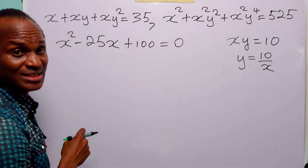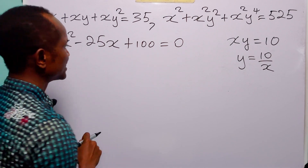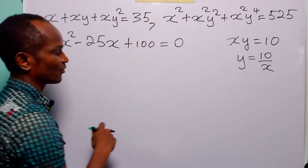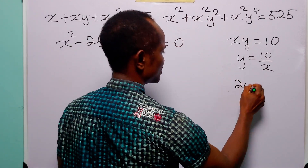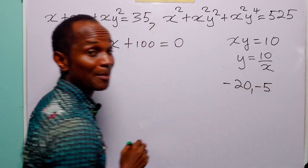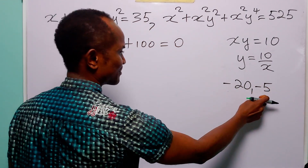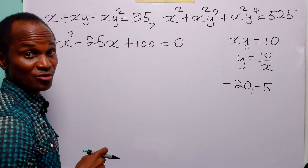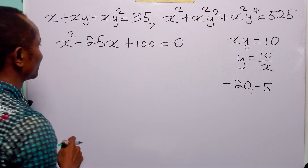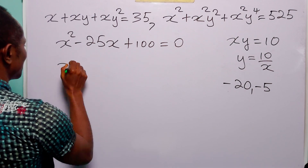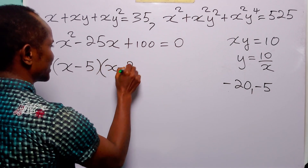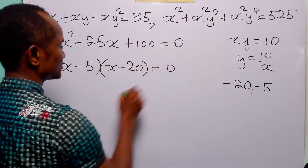Now, to factorize this quadratic equation, all we have to do is find the factors of 100 that add up to minus 25. And that is minus 20 and minus 5, because minus 20 times minus 5 equals plus 100, and minus 20 plus minus 5 equals minus 25. So we have x minus 5 multiplied by x minus 20 equals 0.